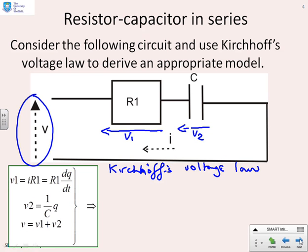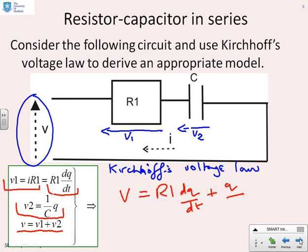First of all, what's the voltage across the resistor? Well, we've got V1 equals I R1. Or if you want to write I in terms of charge, you're going to get R1 dQ dt. What's the voltage across the capacitor? There it is. V2 equals 1 over C times Q. And then Kirchhoff's voltage law tells me I get V equals V1 plus V2. So if I put all this together, I get V equals R1 dQ dt plus Q over C.